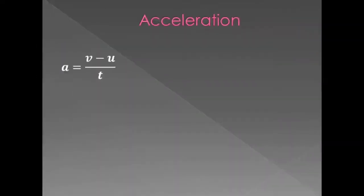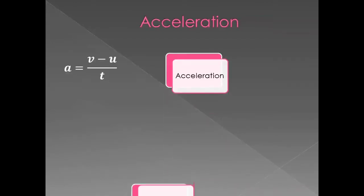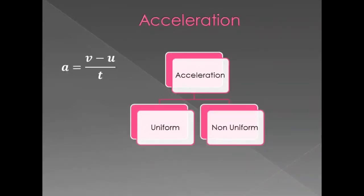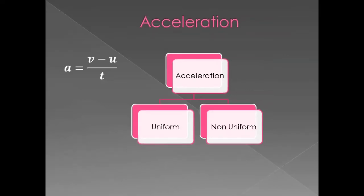Acceleration is change in velocity per unit time. The formula is change in velocity upon time. Acceleration can be of two types: uniform and non-uniform. If the speed or velocity of a body changes uniformly then it is called uniform acceleration; if it changes non-uniformly then it is called non-uniform acceleration. In case the velocity of an object is decreasing, it is called retardation.